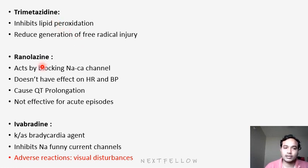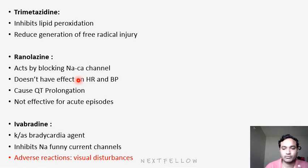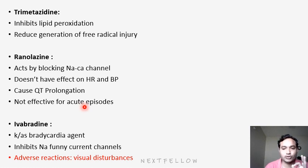Second is ranolazine. It blocks sodium and calcium channels, thereby reducing the heart rate, but it does not have a significant effect on heart rate and blood pressure. However, it causes prolongation of the QT interval, so we should avoid prescribing it along with other QT-prolonging drugs. It is not effective for acute episodes. Ranolazine is FDA-approved in the US for chronic angina pectoris patients only — it is advisable in patients with chronic or repeated episodes.